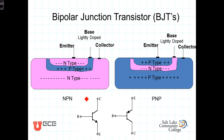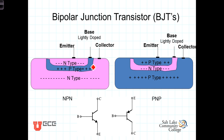The NPN transistor consists of two heavily doped N-type regions known as the emitter and the collector. They're separated by a relatively lightly doped P area, and the width of that P region is also relatively small. So we have effectively two back-to-back PN junctions: a PN junction formed between the P-type base and the N-type emitter, and also a junction between the P-type base and the N-type collector.